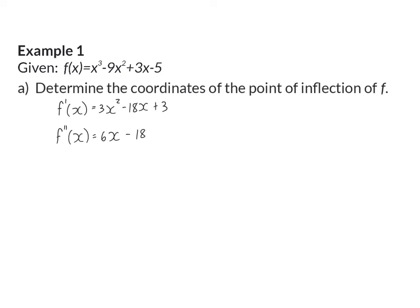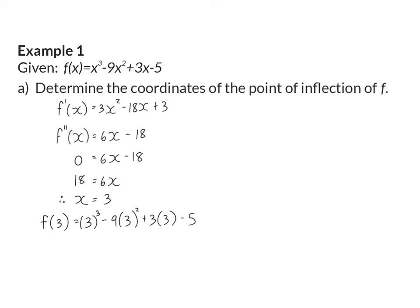Our inflection point is where the second derivative is equal to zero. Setting 6x minus 18 equal to zero and solving, we get that the x coordinate of the point of inflection is 3. To get the y coordinate we substitute 3 into the original function, which gives us a y value of minus 50. So our point of inflection is at (3, −50).